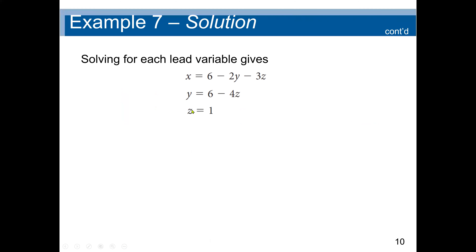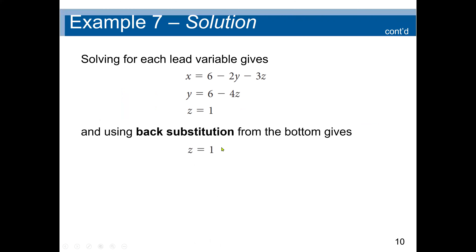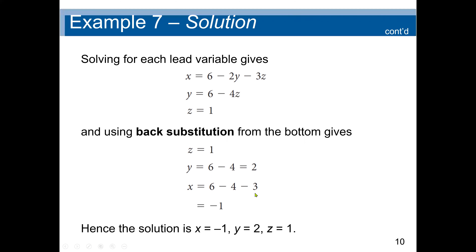Z is 1. We substitute Z equals 1 into the second equation. This is called back substitution. Y equals 6 minus 4 times 1, which gives Y equal to 2. Now with Z equals 1 and Y equals 2, we substitute into the first equation: X equals 6 minus 2 times 2 minus 3 times 1, which gives 6 minus 4 minus 3, so X equals negative 1. Our solution is X equal to negative 1, Y equal to 2, and Z equal to 1.